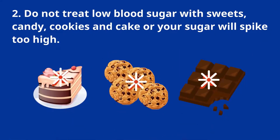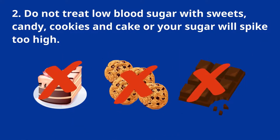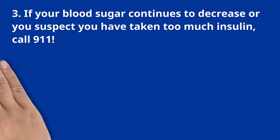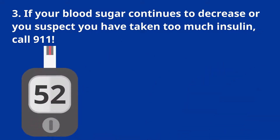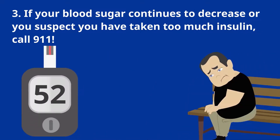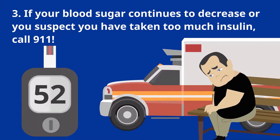2. Do not treat low blood sugar with sweets, candy, cookies, or cake, or your sugar will spike too high. 3. If your blood sugar continues to decrease or you suspect you have taken too much insulin, call 911.